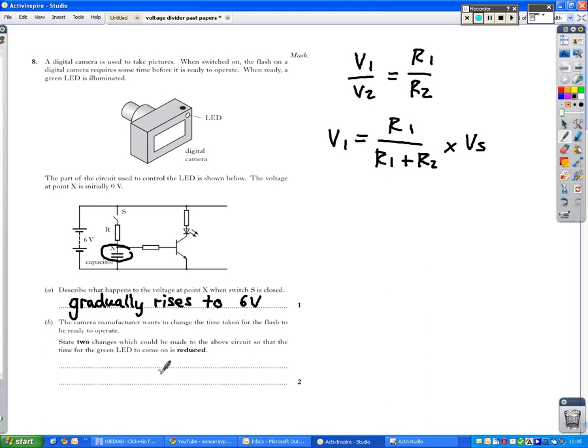The camera manufacturer wants to change the time taken for the flash to be ready to operate. State two changes which could be made to the above circuit so that the time for the green LED to come on is reduced. So we're looking to reduce the time, so we're looking for the capacitor to be able to charge up quicker.